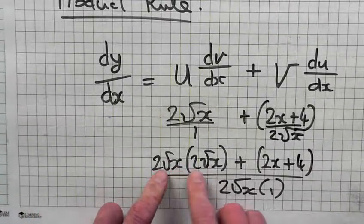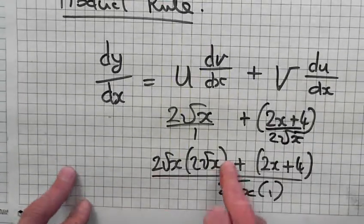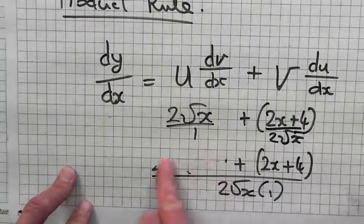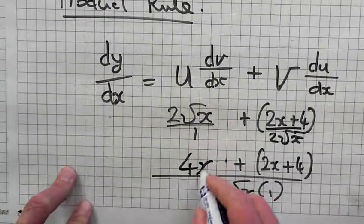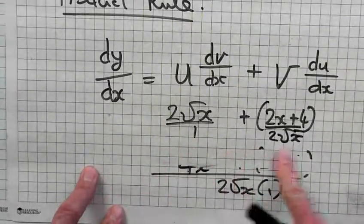4. And root x times root x? X. So that's 4x. What's 4x plus 2x? So you've got 6x plus 4 on top, over 2 root x.